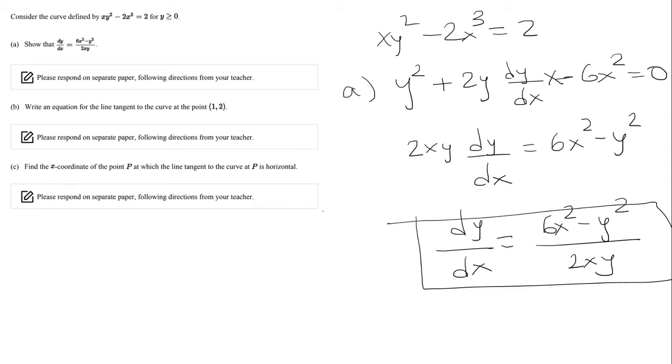Now for part b, we want to write an equation of the tangent line to the curve at the point (1, 2). So for the tangent line, you need two things: a point and a slope. The point that we're given is (1, 2). The slope is the derivative at the x value.